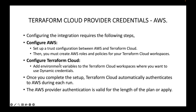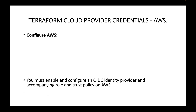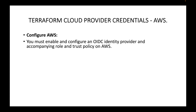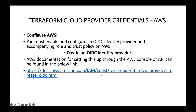This AWS provider authentication is valid for the length of the plan or apply — whatever temporary credentials Terraform Cloud uses will be valid until the plan or apply completes. First is configuring on AWS: you must enable and configure an OpenID Connect identity provider and an accompanying role and trust policy on AWS. AWS documentation for setting up through the AWS console or API can be found via the provided link. Here you have the steps for creating the identity provider.